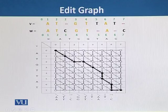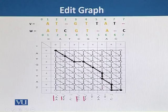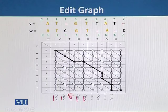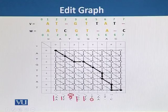Whenever there are identical alphabets, we will use the diagonal position. Whenever there is a missing alphabet in the V string, we will use the horizontal arrow. And whenever there is a missing alphabet in the W string, we will use the vertical arrows.